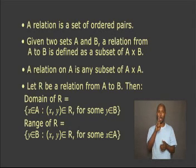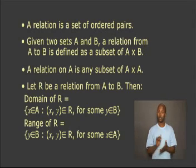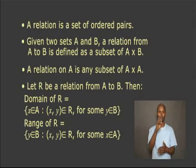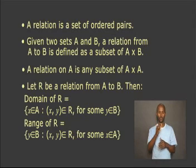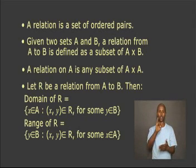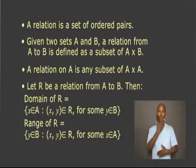Let R be a relation from A to B. In that case, the domain of R is the set of X, where X is an element of A, such that X is R-related to Y, for some Y that are elements of B. The range of R equals the set of Y, where Y is an element of B, such that Y is R-related to X, for some X that are elements of A.